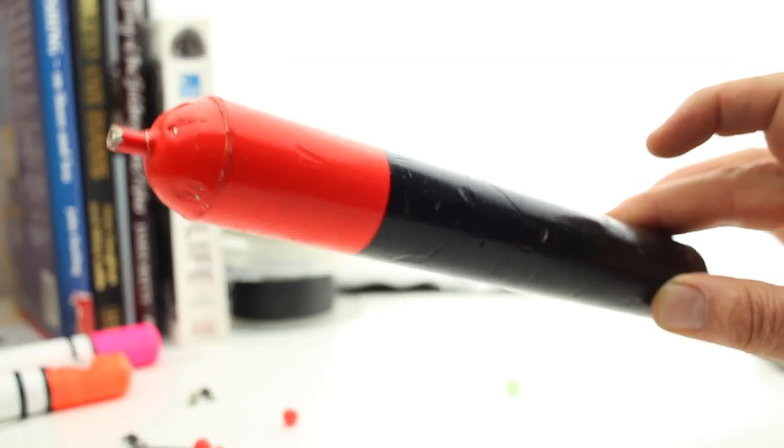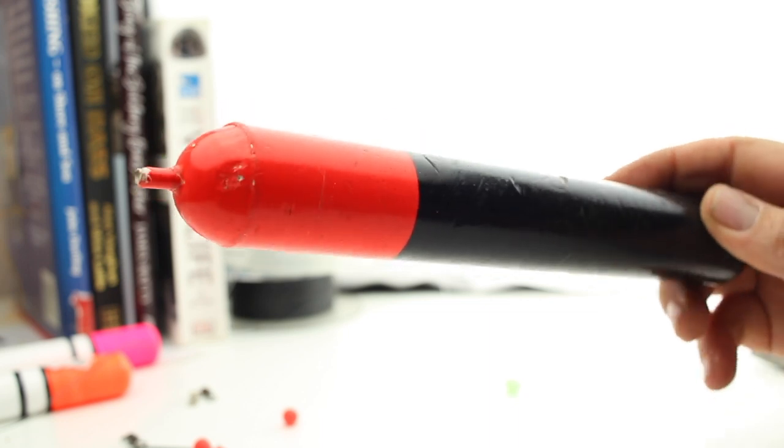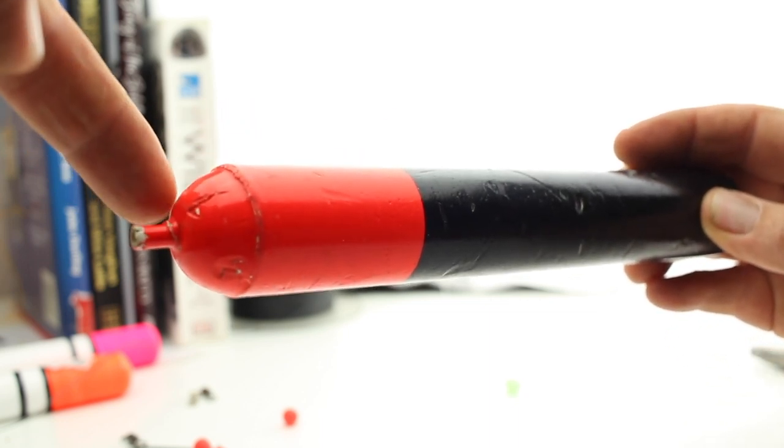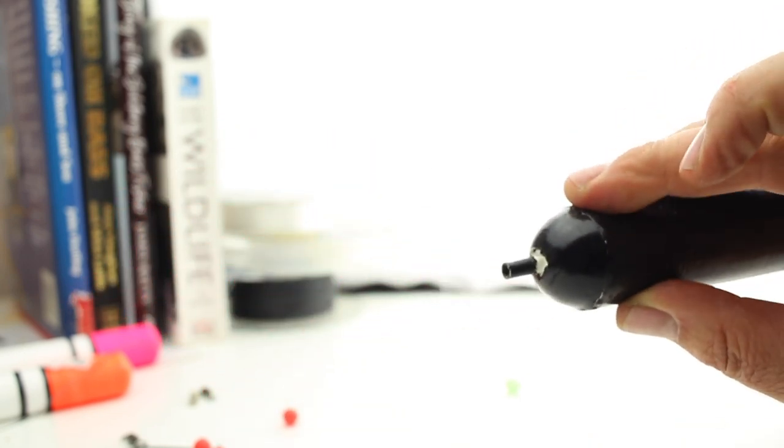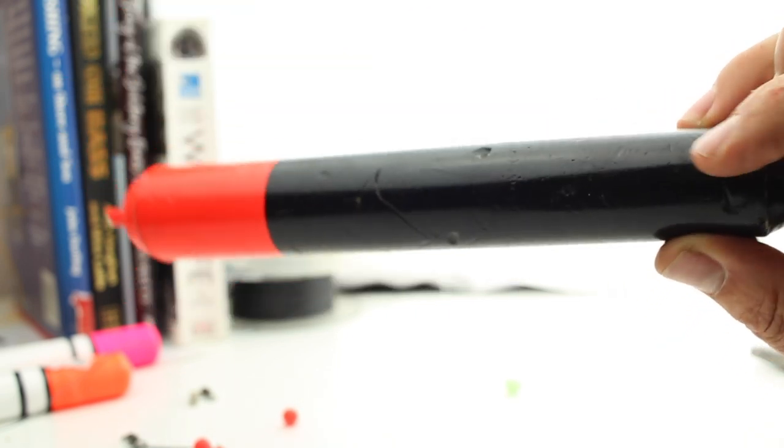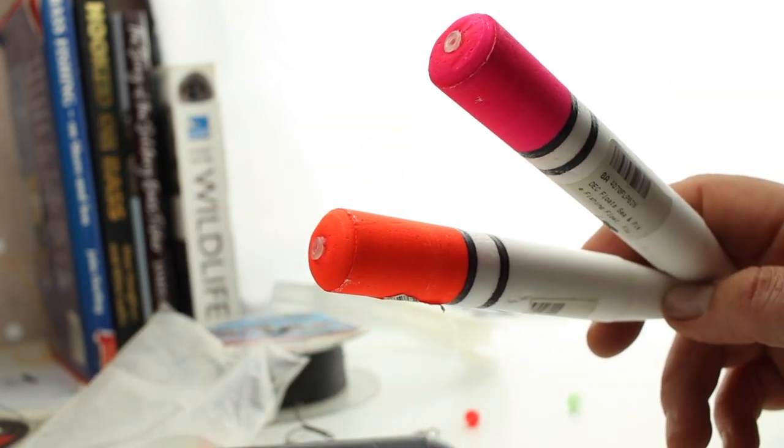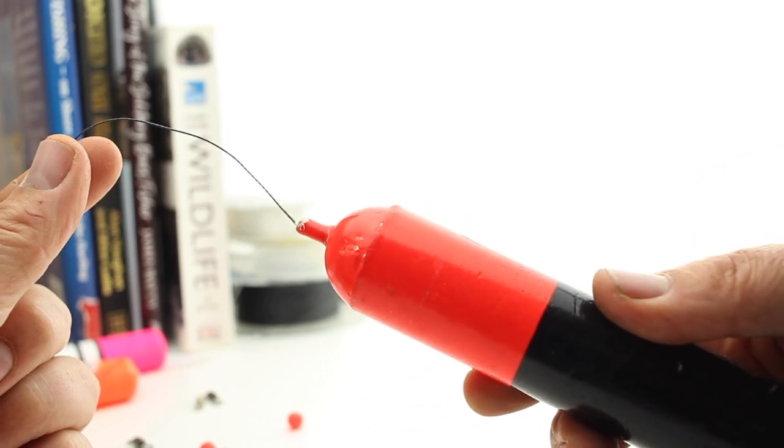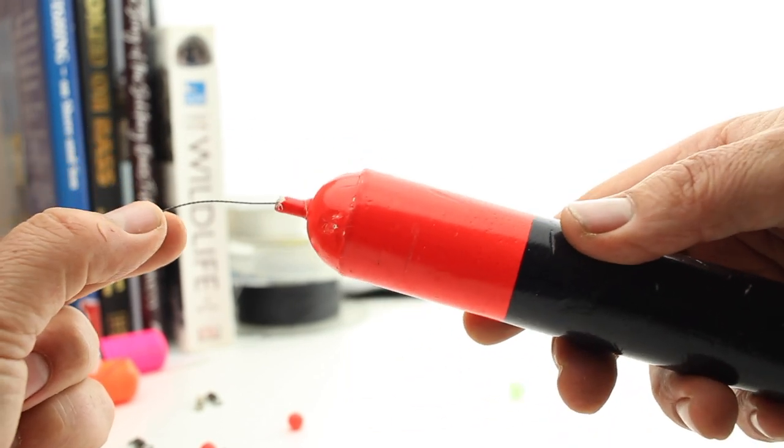Then we're using these sort of cigar floats. All sorts of floats are available, of course. The problem with these cigar floats, they tend to be fine, particularly when you're using braid as a main line. It can get caught on that little sort of notch at the top. Little homemade ones there. The main thing is that the line goes through the middle of the float and can slide up and down easily.